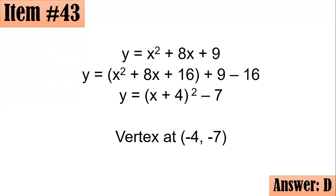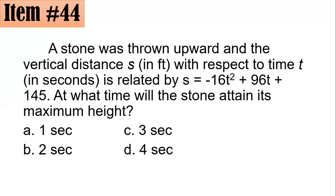Next number, 44. A stone was thrown upward and the vertical distance s in feet with respect to time t in seconds is related by s equals negative 16t squared plus 96t plus 145. At what time will the stone attain its maximum height? You see, in this equation, the leading coefficient is negative. So we are sure that the parabola opens downward and that the vertex is a maximum. So I'm sure that this has a maximum point.